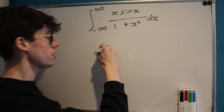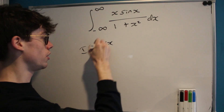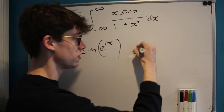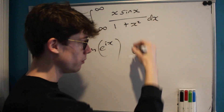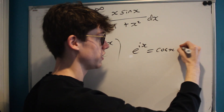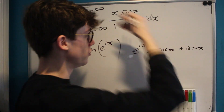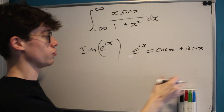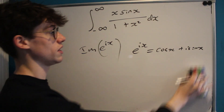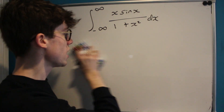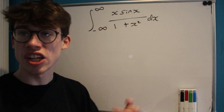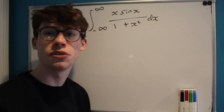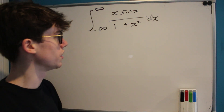Sine x can also be represented as the imaginary part of e to the ix. Euler's identity tells us that e to the ix equals cos x plus i sine x, and due to the distributive property of the integral, if we take the imaginary part and replace sine x with e to the ix, we get the same thing. So these three things together suggest there's something complex involved, and contour integration would be a good way to go about solving this.